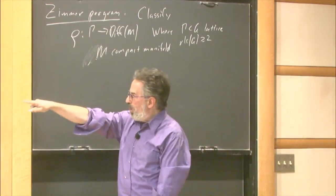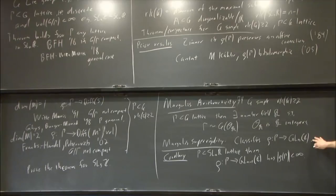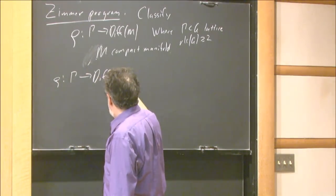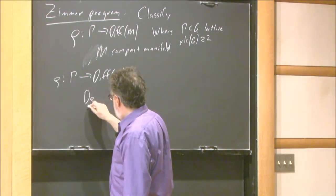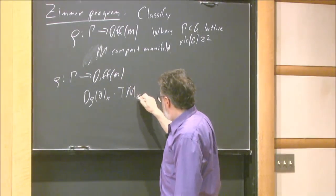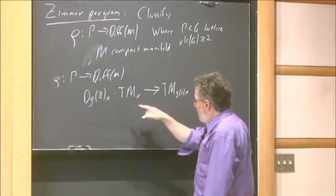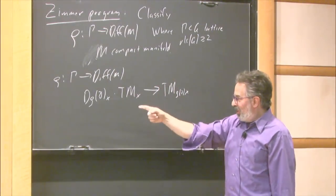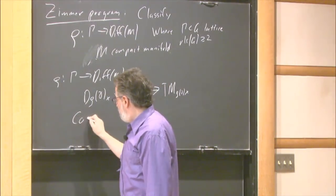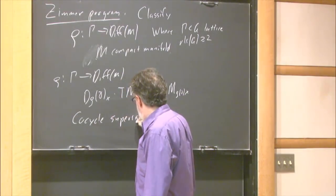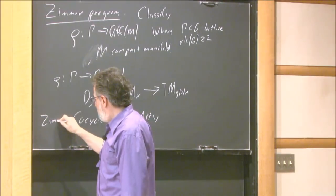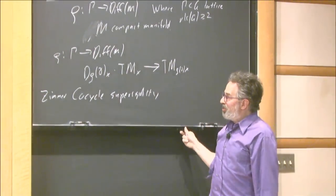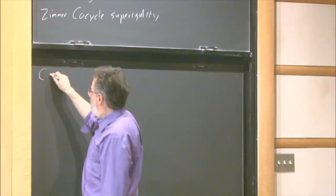I want to say one word about why the main theorem is a natural generalization of super-rigidity. If I have rho from Gamma to diff(M), then I can look at D rho of gamma at a point x, and that gives me a map from the tangent space at x to the tangent space at rho(gamma)(x). These things compose over something that looks like a group law, so this gives me some sort of non-linear representation that looks like the linear representation. There's a theorem called cocycle super-rigidity that says something about this non-linear representation.